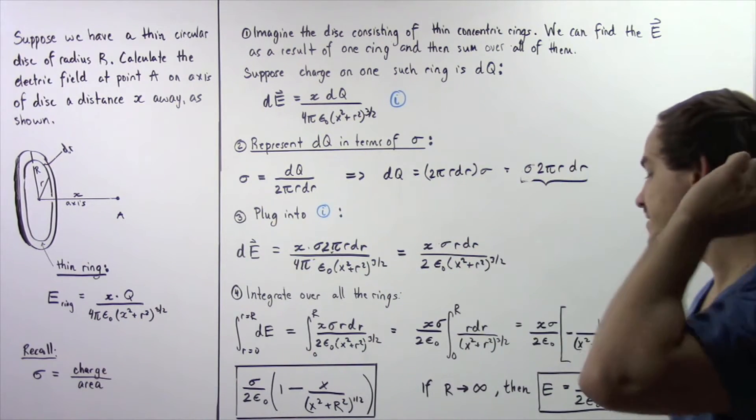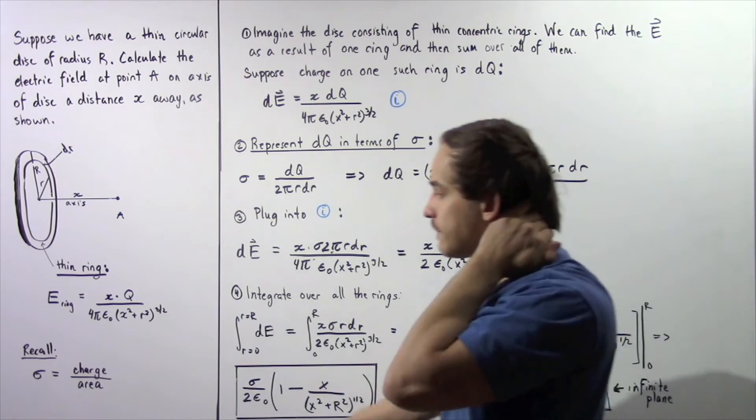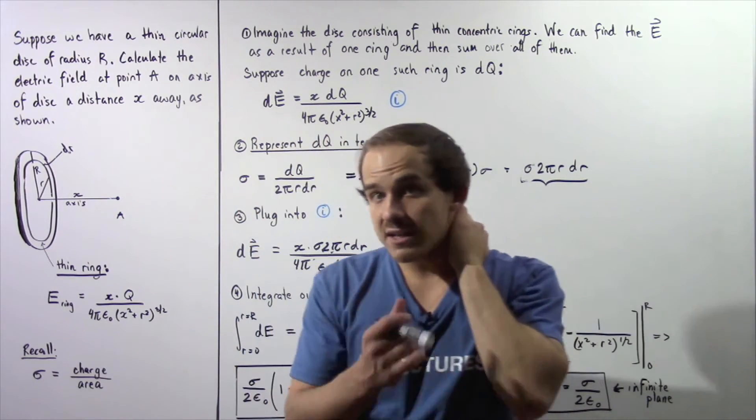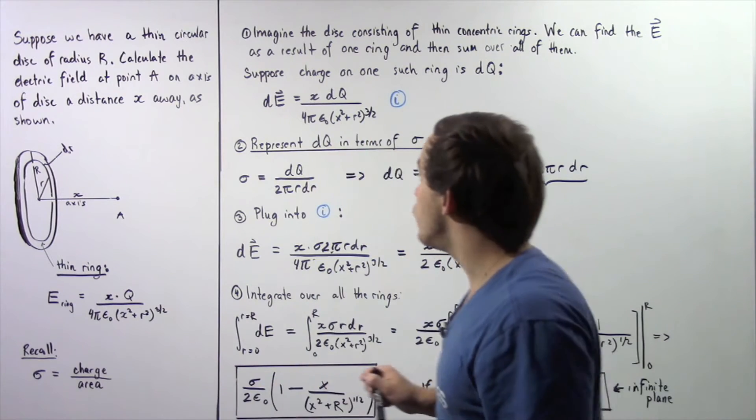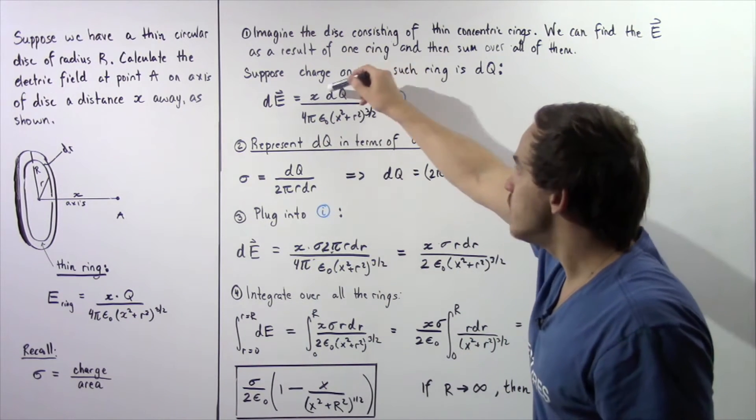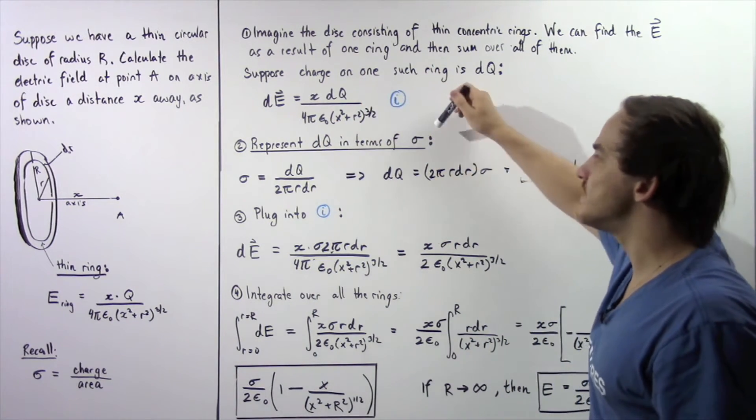Now let's move on to step two. In step two, we're going to use the following sigma. Now sigma is defined as the charge per area. And we want to represent dq, this dq, in terms of sigma.